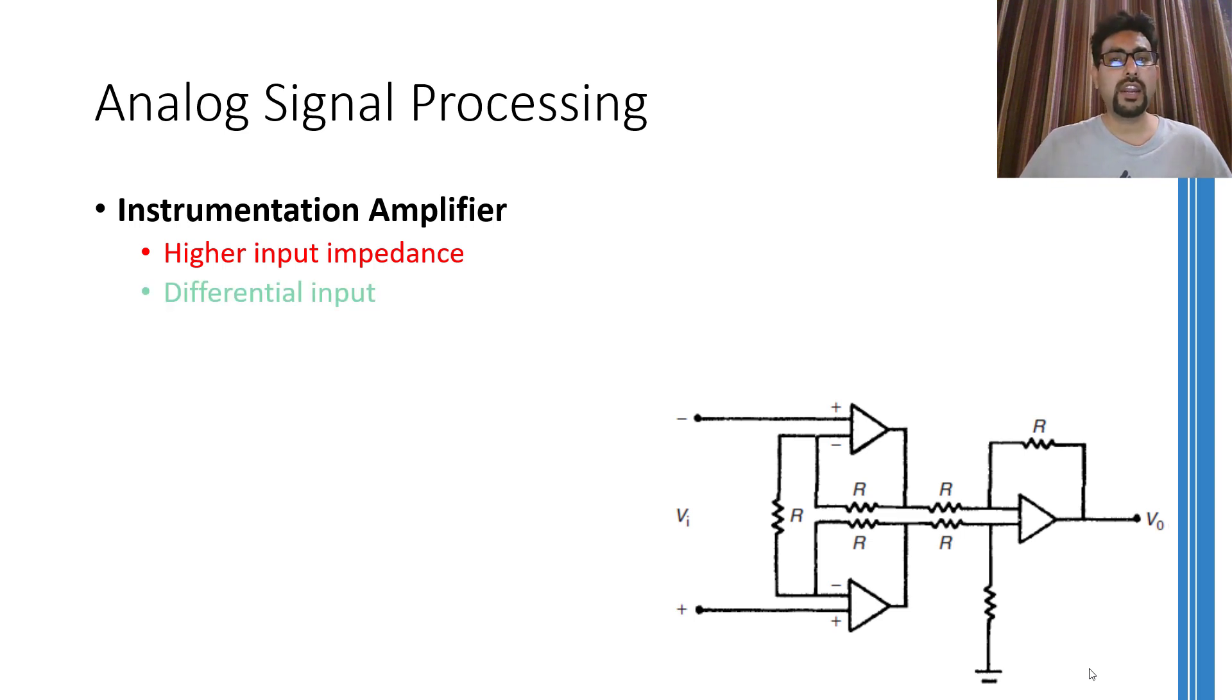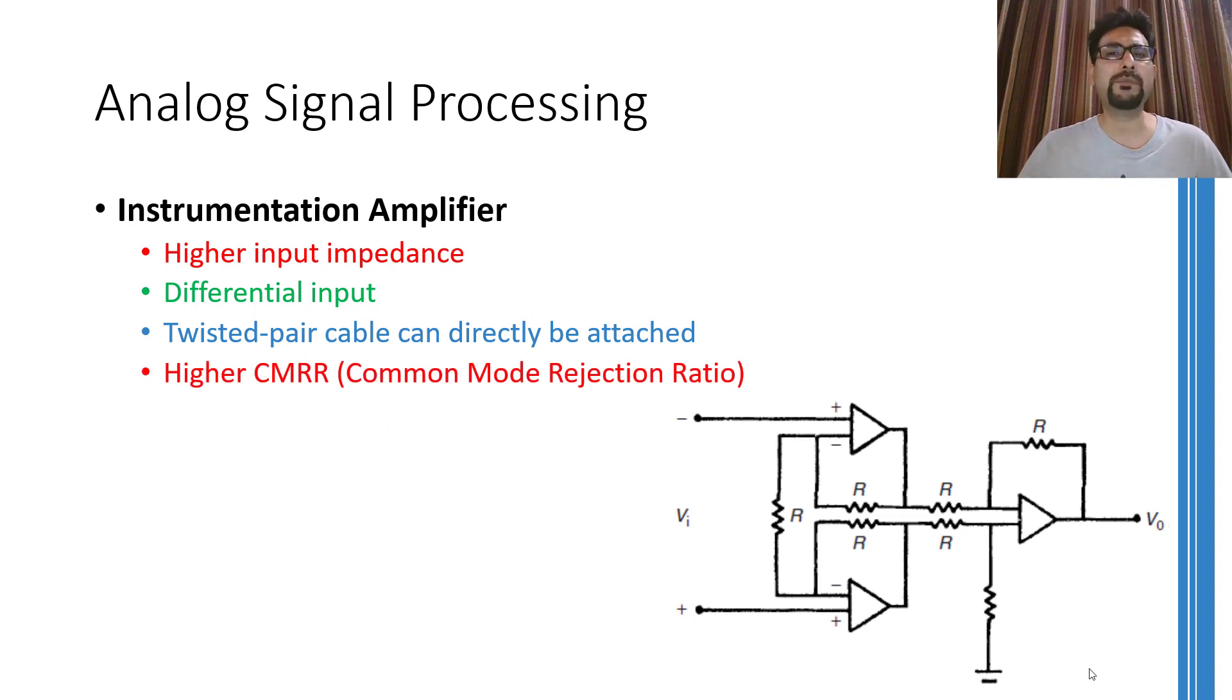Secondly, it is much more effective and efficient in removing the common things present in the two signals. That is, it has a much higher common mode rejection ratio which is abbreviated as CMRR. Normally, in practical uses, wherever a twisted pair cable is used, an instrumentation amplifier is used to get the difference of the signals and work on that.